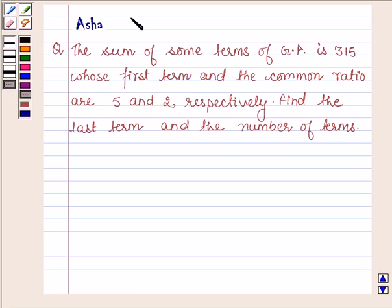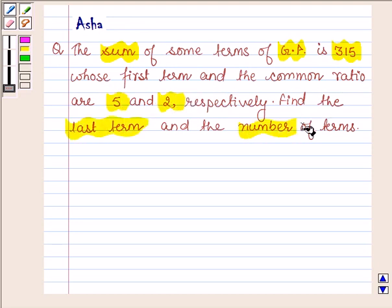Hi and welcome to the session. I am Asha and I am going to help you with the following question which says: The sum of some terms of GP is 315 whose first term and the common ratio are 5 and 2 respectively. Find the last term and the number of terms.